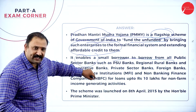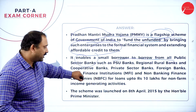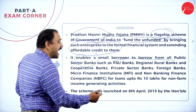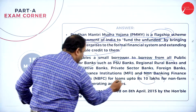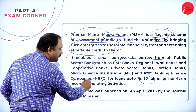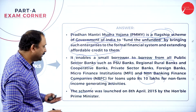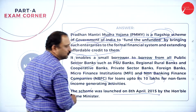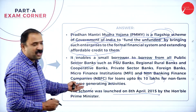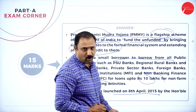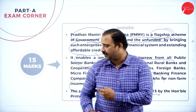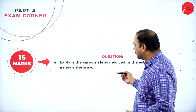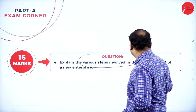Entrepreneurs can get up to 10 lakh rupees for a non-farm income generating activity. The scheme was launched on 8th April 2015 by the Honorable Prime Minister of India.